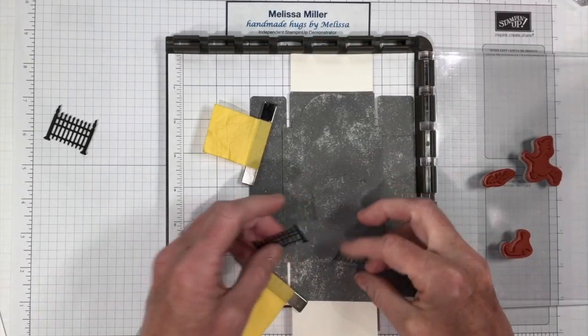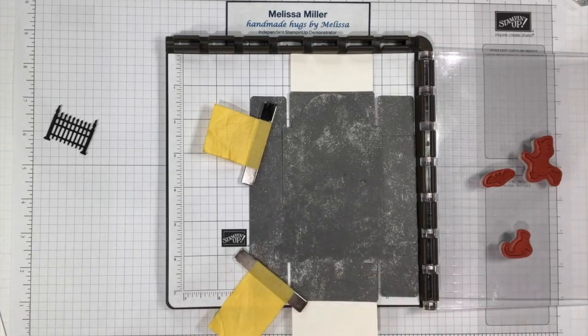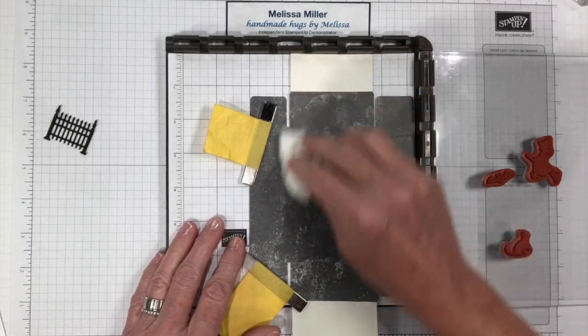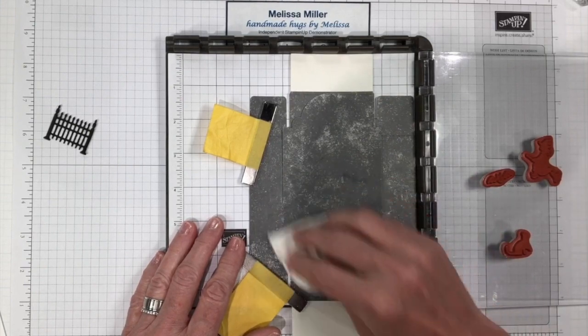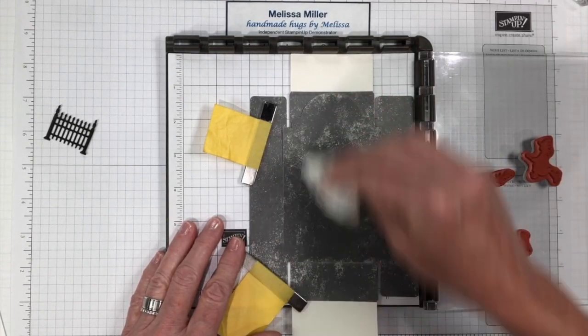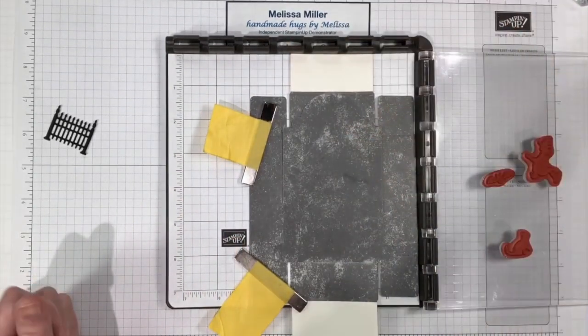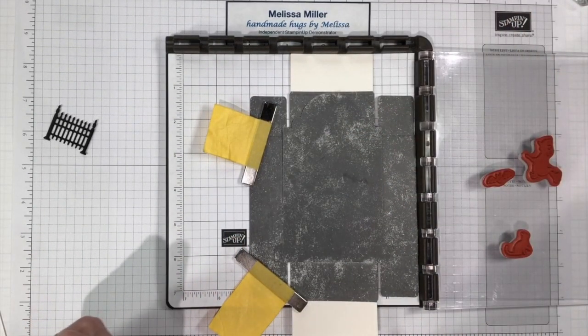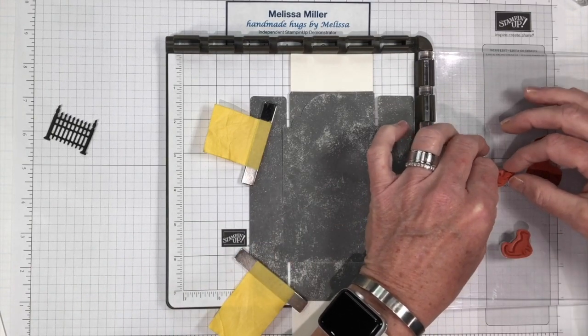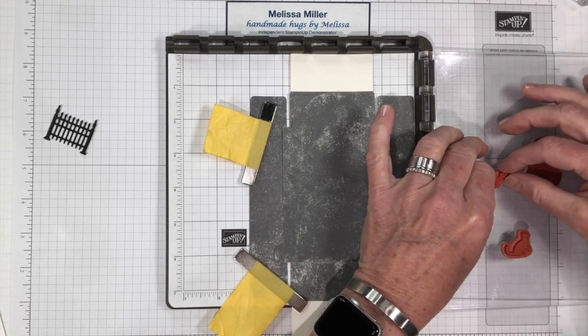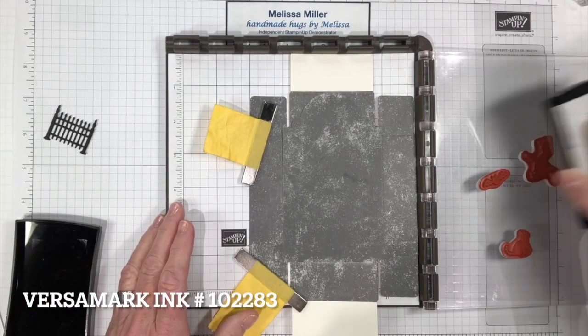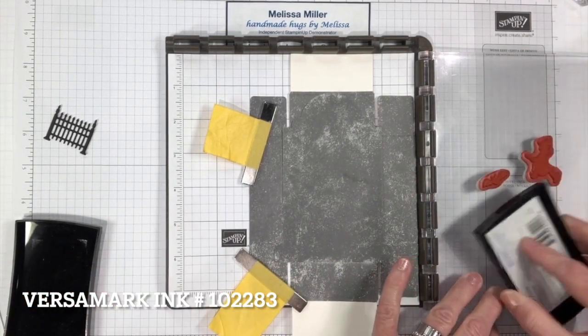What we're going to do is we need to bring in some of our embossing buddy just to wipe off all the static cling and the oils off of your fingers. So we've got that wiped nice and clean. We will bring in our Versamark. I am going to move him just over a little bit.